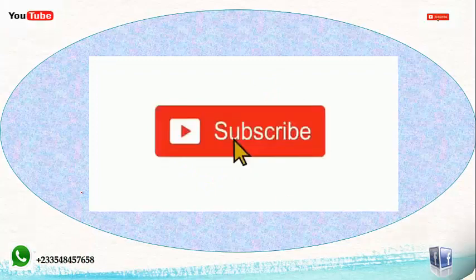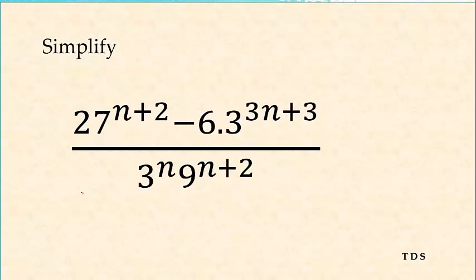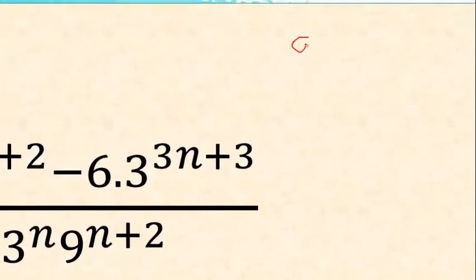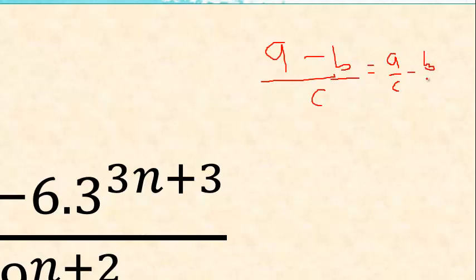Now let's get started. This is the question we have before us, and this question is very simple. Before we can solve this question, let's understand this. We know that A minus B over C is the same as A over C minus B over C. So this one can be written as this one. We have equal 10 to 3, so that's that.